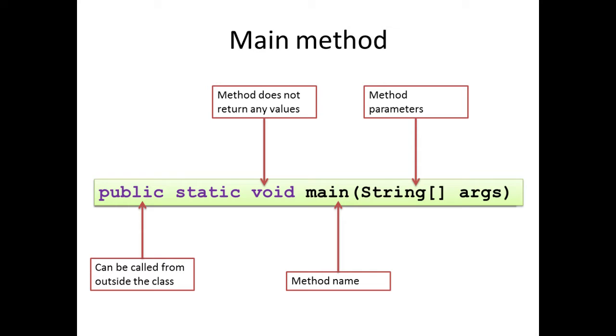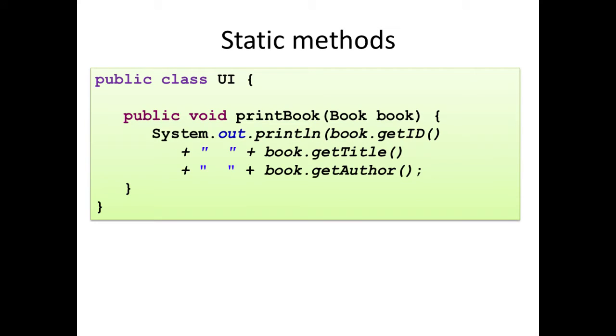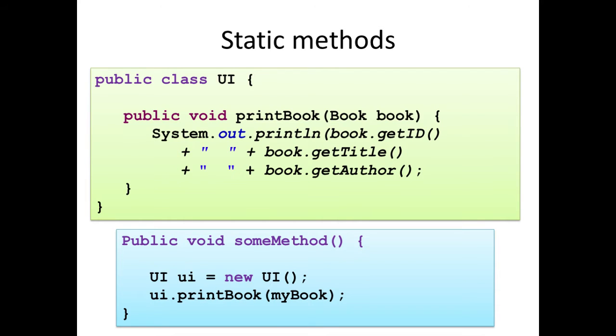Well, a static method can be run without having to create an instance of the class. You might remember in our course that we created a UI class that had some useful functionality in it, such as the ability to print out a book. In order to call the print book method, we had to create an instance of our UI class which we called UI in lowercase, and then we could call the UI dot print book method.